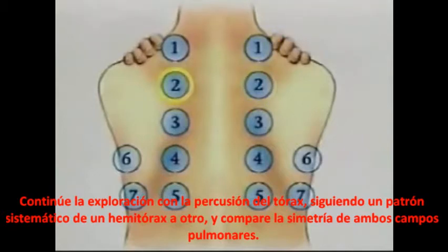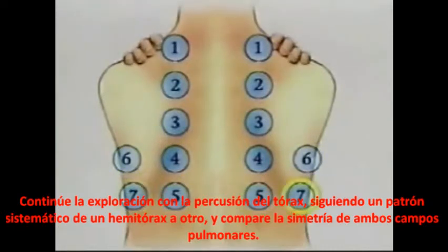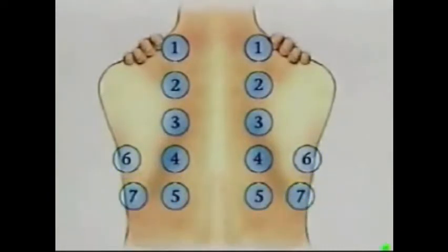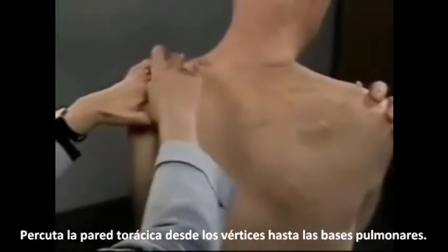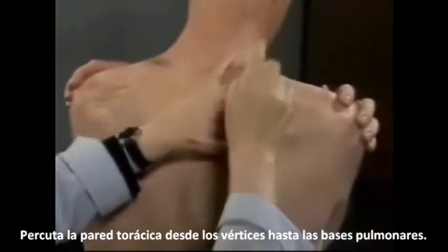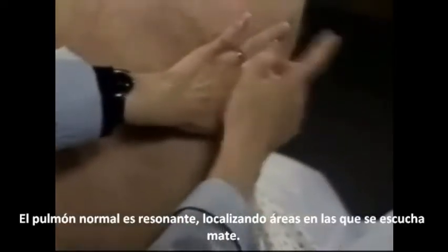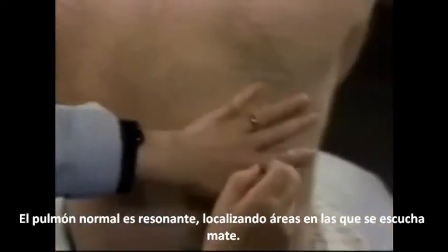Continue the examination by percussing the chest in a systematic manner, going from side to side as you move down the thorax. Percuss down the chest wall from the apices to the bases of the lungs. Listen to the intensity, pitch, and duration of your percussion notes and decide what kind of notes you are hearing. Normal lungs are resonant. Locate any areas where you hear abnormal notes.